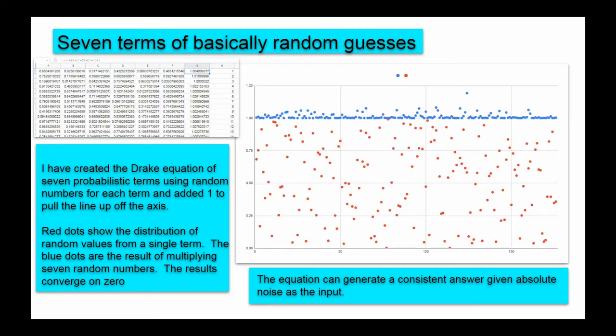The Drake equation can trick you into believing it's converging on an estimate when it's not. What I did is I took the Drake equation and I input variables randomly. A through G on the screen here is the seven terms in the Drake equation and I put in random numbers. What you're seeing on the graph, the red dots, are column A. That's clearly random. The blue dots are the result of multiplying the seven random numbers together. You can see they rapidly converge on the number one. It's actually zero. I deliberately added one to the distribution to lift the line off the axes. Seven random variables can be put into the Drake equation and it will stabilize to an answer of no civilizations in the universe.